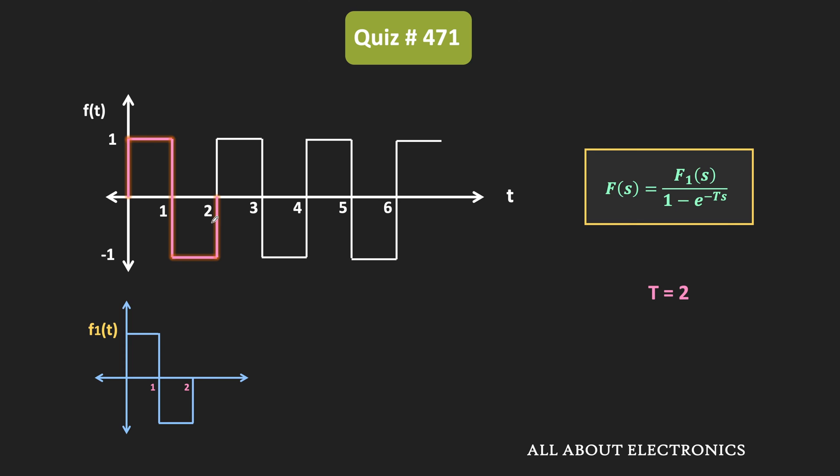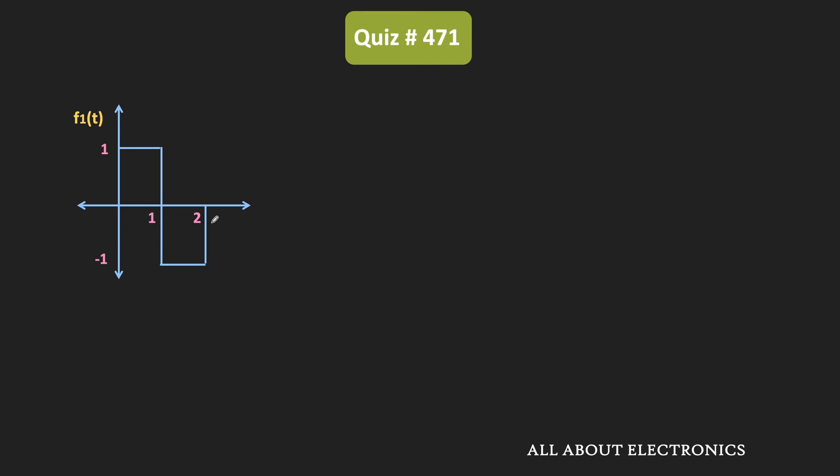That means f1(t) is the first period of this periodic signal, and F1(s) is the Laplace transform of f1(t). So to find the Laplace transform of this periodic signal, first we need to find F1(s), and to do that, we first need to find the mathematical expression of f1(t).